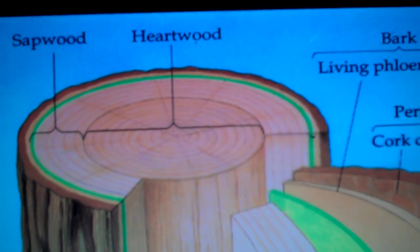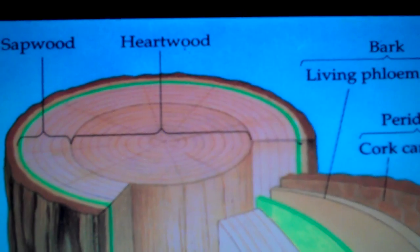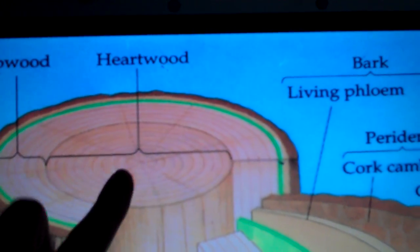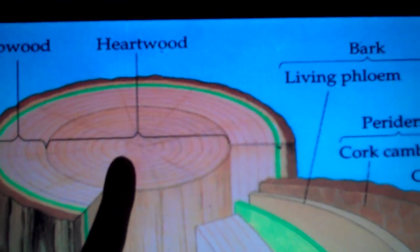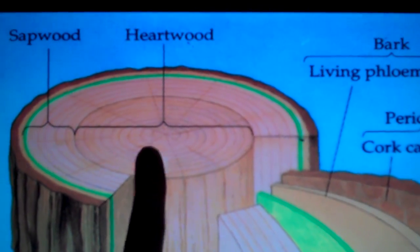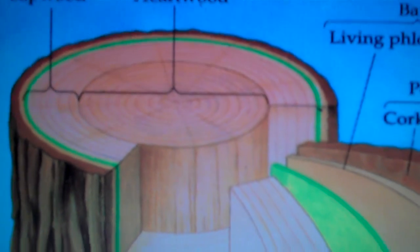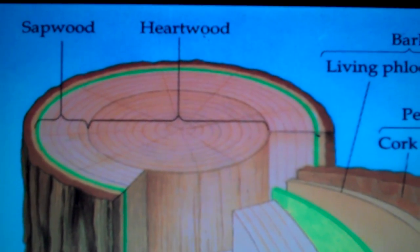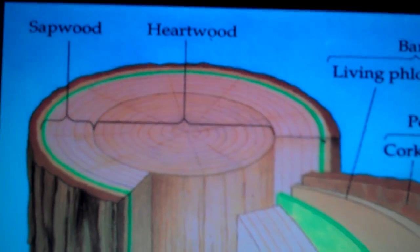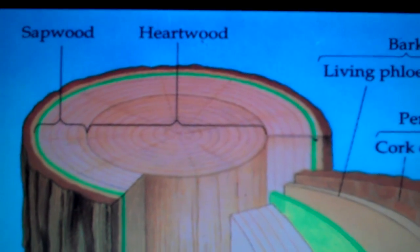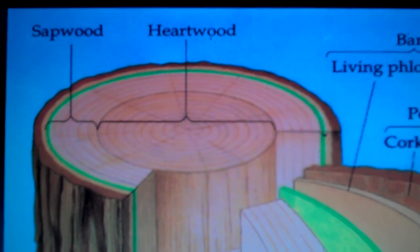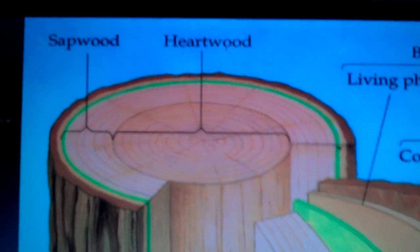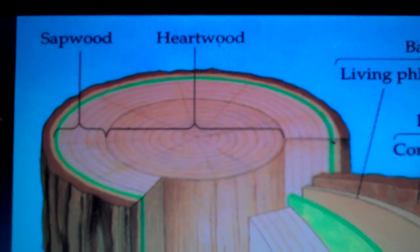Over time, the secondary xylem is responsible for the rings in the tree. The internal xylem is called heartwood because it is no longer functional. These xylem cells have been filled in with resin to give the tree its strong structure and support, and also to help prevent wood-boring pathogens, fungus, and different forms of attack.